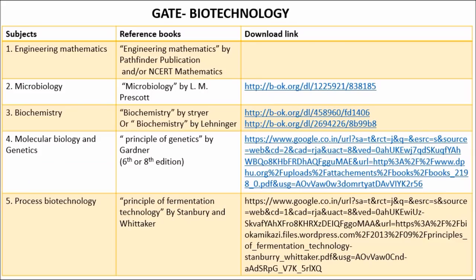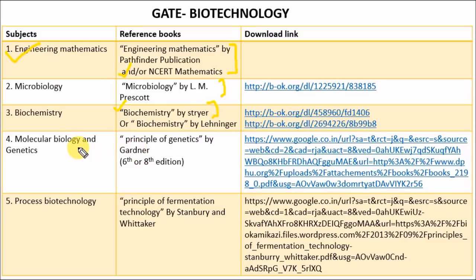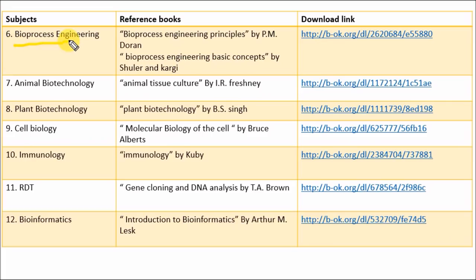Now let's see the important books for GATE Biotechnology. For Engineering Mathematics, refer Engineering Mathematics by Pathfinder Publication or NCERT Mathematics. For Microbiology, refer Microbiology by Prescott. For Biochemistry, Stryer is the best book. For Molecular Biology and Genetics, refer Principles of Genetics by Gardner. For Process Biotechnology, refer Principles of Fermentation Technology by Stanbury and Whitaker — you can download this book from the provided link.